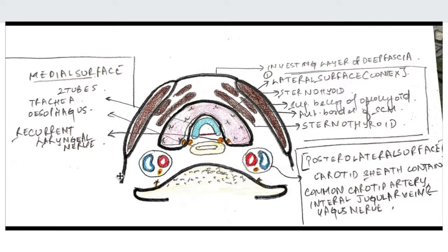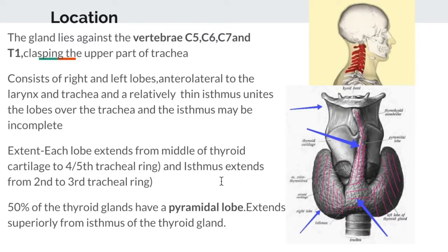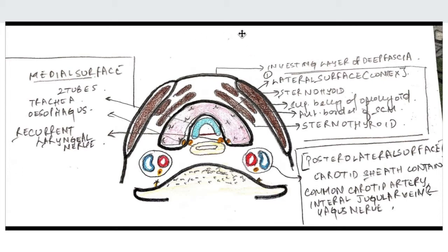In this image I want to show you a transverse section of the neck. If we cut the neck transversely, we would see the anterior surface, the posterior surface, the trachea, and the vertebrae. The thyroid gland lies anterolaterally to the trachea.